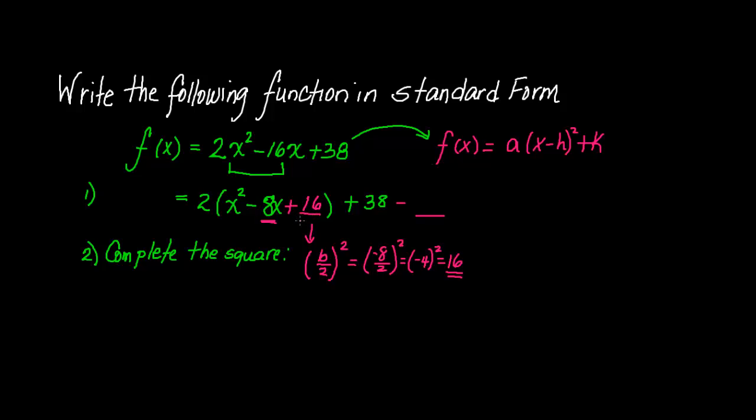Now, I added 16. So you would think, subtract 16 so that you don't have any effect on this function's original value. But look very closely. Did I really just add 16? I really added 32, not 16. Why? Because this 2 outside the parenthesis belongs to each one of these terms. So if I were to distribute 2 times x squared and 2 times 8x and 2 times 16, this would really be 32. So if I added 32, I have to subtract 32.